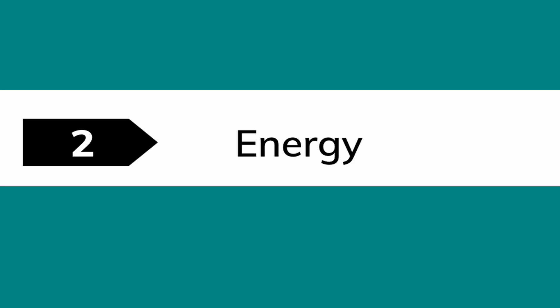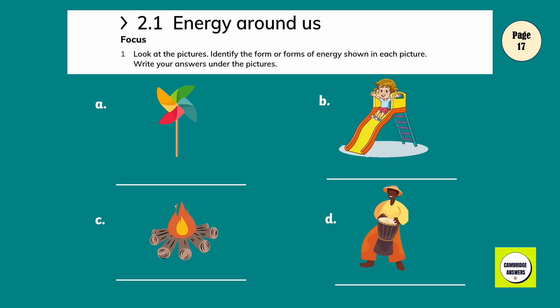Chapter 2: Energy. Exercise 2.1 Energy Around Us. Look at the pictures. Identify the form or forms of energy shown in each picture. Write your answers under the pictures. Movement. Movement. Heat and light. Sound and movement.